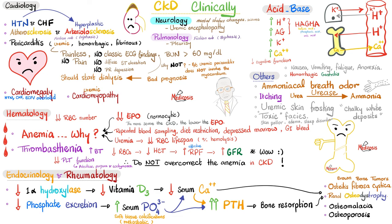Uremia can lead to encephalopathy and seizures. Uremia can lead to pleurisy with a biphasic friction rub. Uremia can lead to pericarditis — a triphasic friction rub that does not disappear when you hold your breath, unlike pleurisy. The uremic pericarditis is usually painless, with no classic EKG findings — do not expect to see diffuse ST elevations in most leads or PR depression. Uremic pericarditis has a relatively poor prognosis and is an indication to start dialysis right now.